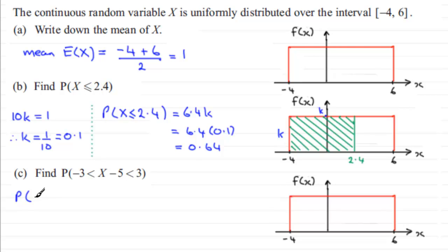So if I just copy this down we've got the probability of X minus 5 being between minus 3 and 3. What I do in this case is I would add 5 to each of the sections here. So if we add 5 to minus 3 what we've got is 2, and then if I add 5 to X minus 5 we're just left with X, and adding 5 to the 3 just gives us 8. So we want the probability of X being between 2 and 8.